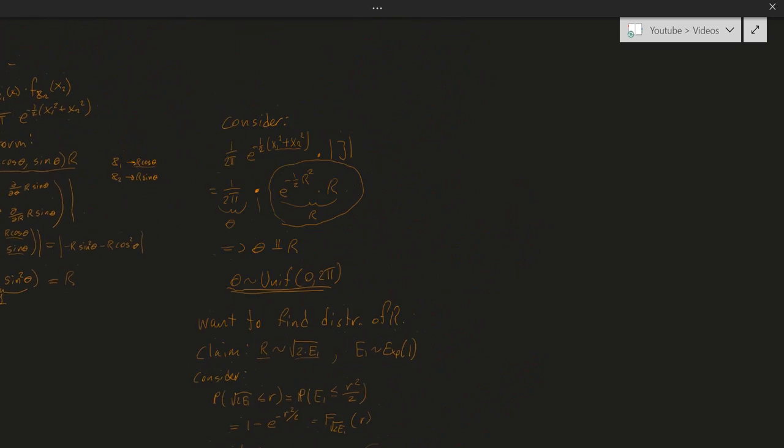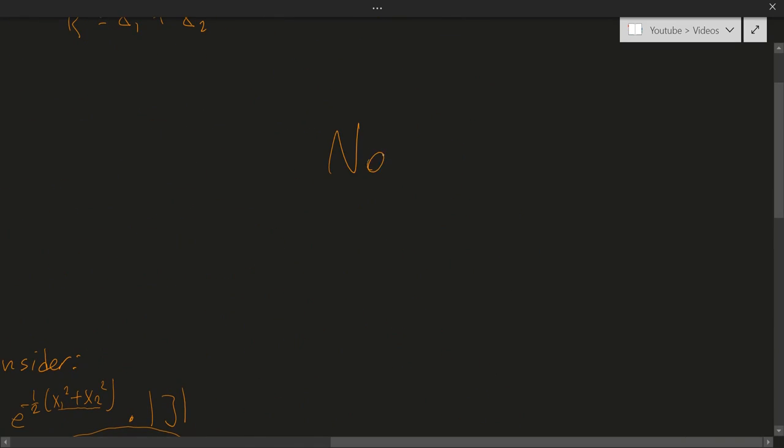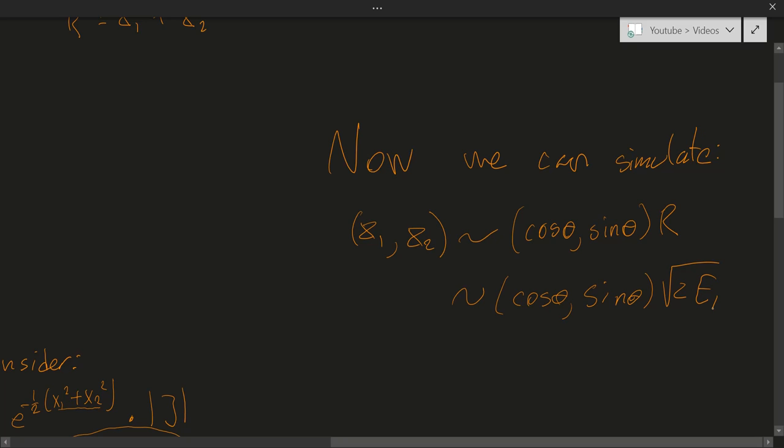Now we can simulate. Because we know that x1, x2, we can easily write this using the polar coordinates instead. So r times cosine of theta, sine of theta. And this has the same distribution as the cosine of theta, sine of theta multiplied by square root of 2 times a standard exponential. And we also know that these thetas are uniform 0 to 2 pi.